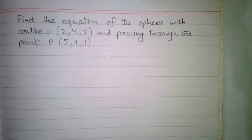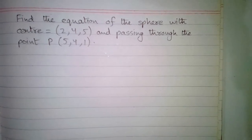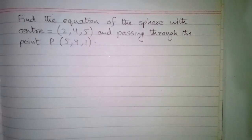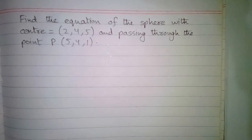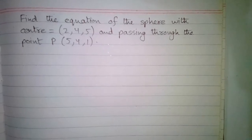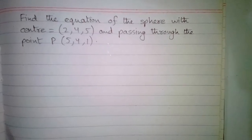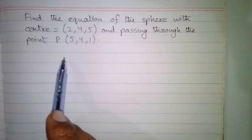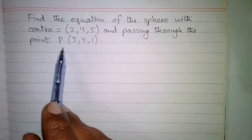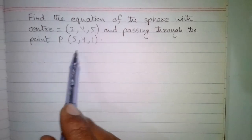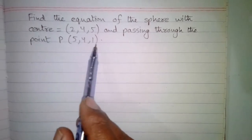In this video we will find the equation of the sphere with center whose coordinates are 2, 4, and 5, and passing through the point P whose coordinates are 5, 4, and 1.